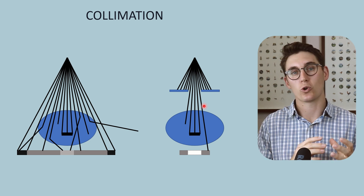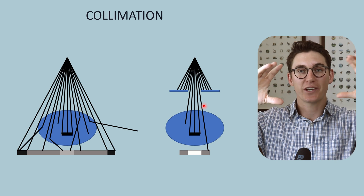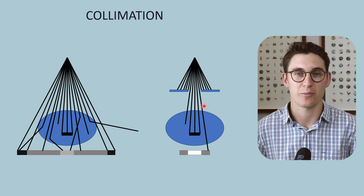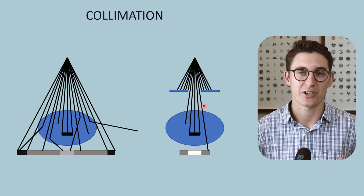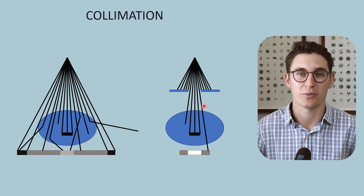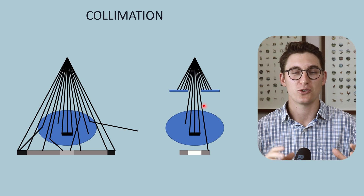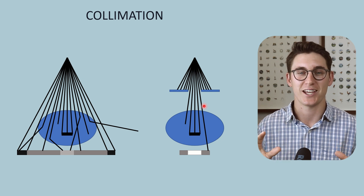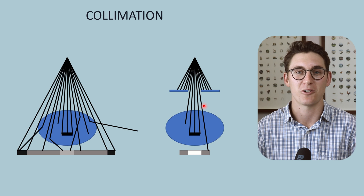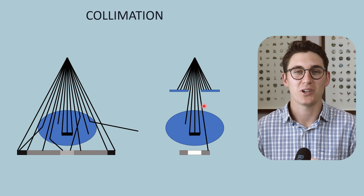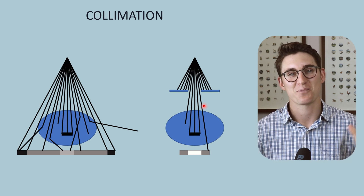In our next talk, we're going to loop back around and look at the x-ray circuit that powers our x-ray machine — the primary circuit, the secondary circuit, and the filament circuit. After that, we can finally move on to the Bremsstrahlung and characteristic radiation production of x-rays. I'll see you all in that next talk where we look at the x-ray circuit. Until then, goodbye.